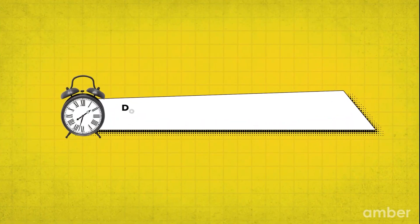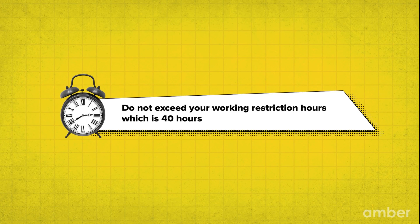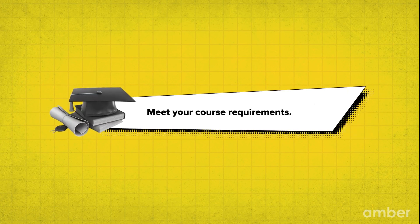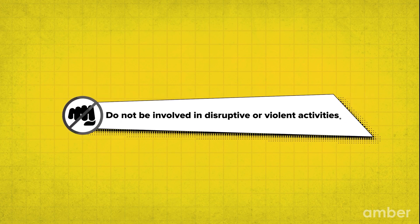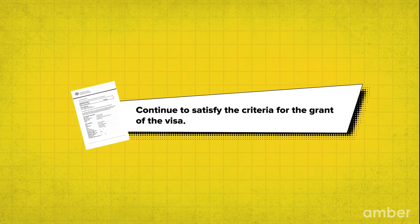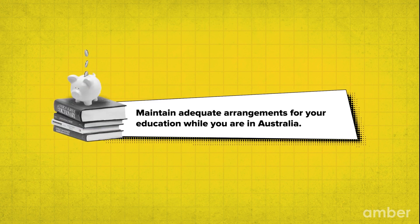There are some conditions to your Australian visa that you must follow. Do not exceed your working restriction hours, which is 40 hours a fortnight. Meet your course requirements. Do not be involved in disruptive or violent activities. Maintain adequate health insurance. Continue to satisfy the criteria for the grant of the visa, and maintain adequate arrangements for your education while you are in Australia.